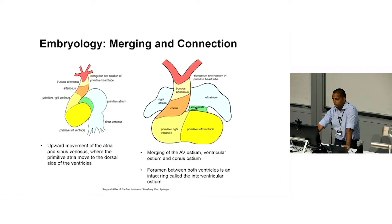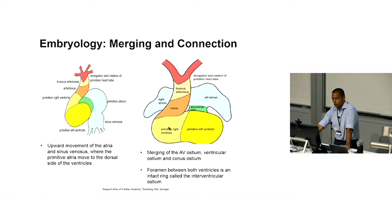We're almost at what an adult heart looks like, except for the AV canal. We've got to get a tricuspid valve here, a mitral valve here, and a connection between the right and left atrium to the respective ventricles. We also have to turn the outflow into two trunks that connect to the right side of the right ventricle and to the left ventricle.